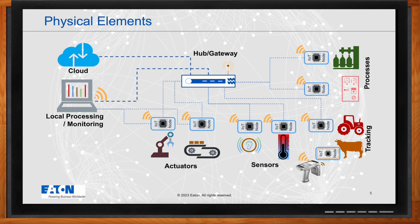In scenarios where edge devices have limited processing power, they may depend on a central computer for decision-making, which can be a local on-site computer, remote server, or cloud. In such cases, significant data transfer occurs between the central computer and edge devices. Hubs or gateways in an IoT setup often serve as intermediaries, collecting, organizing, and forwarding data between edge devices and clients or central repositories, performing data aggregation, filtering, and protocol translation.